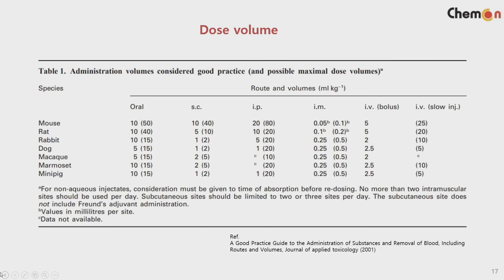The next point is dose volume. We cannot administer different doses randomly; maximum dose volumes are found in references and SOPs. Based on these references, you can set the dose volume. However, your product under development may require a larger dose due to high concentration or viscosity. In that case, you can test with the animal to see if there is any suffering or other change. If no change is observed, you can increase the dose volume slightly beyond the recommended level.